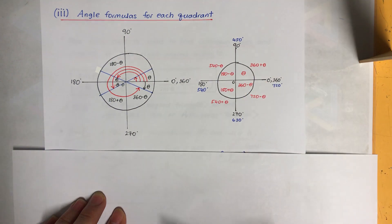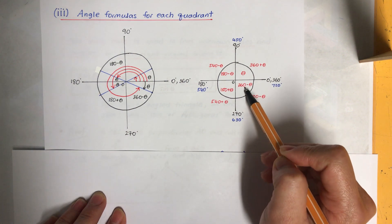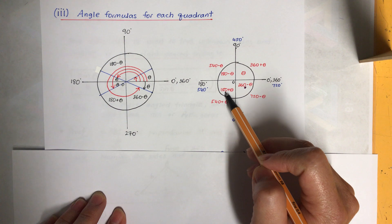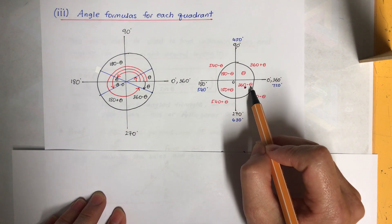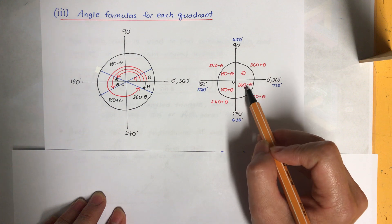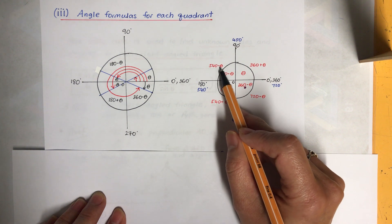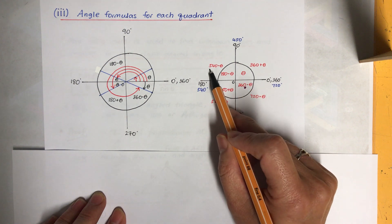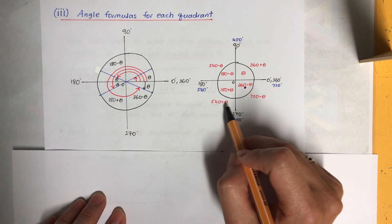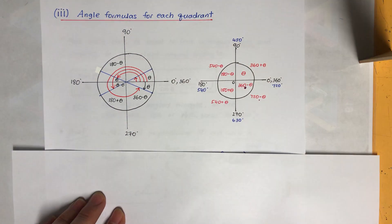Beyond 360°, you can see the pattern: θ, 180°−θ, 180°+θ, 360°−θ — the values increase by 180°. So the next cycle gives 360°+θ, then 540°−θ, then 540°+θ, then 720°−θ, and so on, continuing indefinitely.